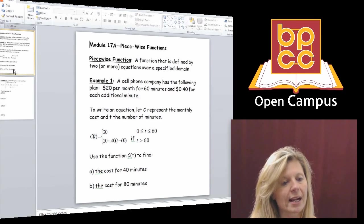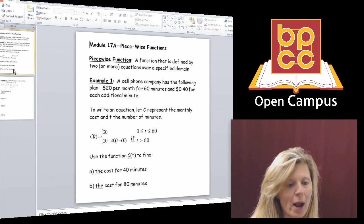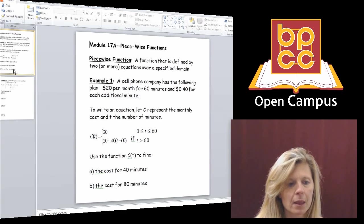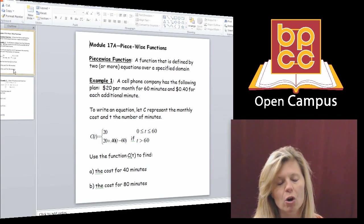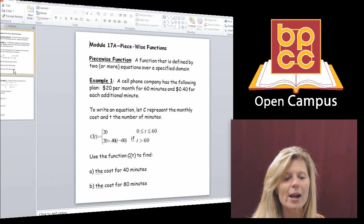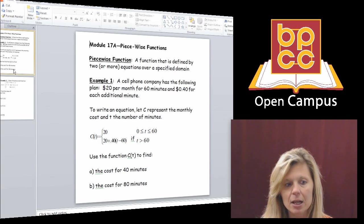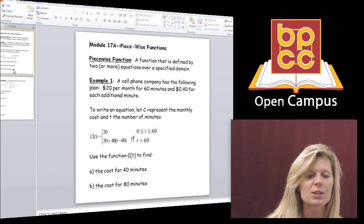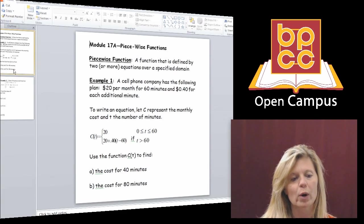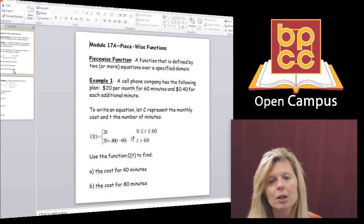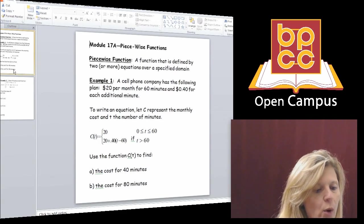Well, what happened is back in the early 90s, when you went and bought a cell phone plan, for them to figure out your total cost of your bill each month, they had to write your bill in pieces. So the equation that went with your bill was not one equation. It was several equations based on the plan. So we're going to go up to the board and look at this equation in more detail.